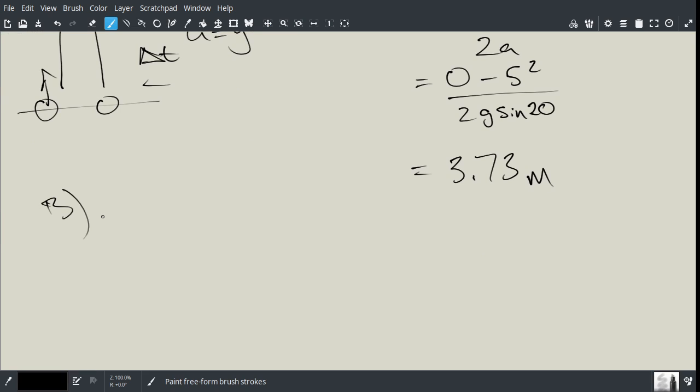is asking what is the time, how much time elapses before the box returns to its starting point. So this we can use a different kinematics equation, we can use delta D equals 1 half at squared plus vi t.